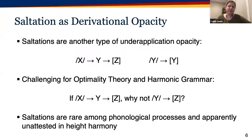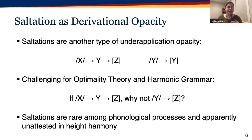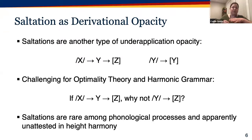Like chain shifts, saltations are a type of under-application opacity. If we have a process that maps x to y and that derived y to z, while underlying y maps faithfully to y, then the y-to-z process has under-applied to underlying y. Like chain shifts, saltations present a challenge to optimality theory and harmonic grammar because there's no way to distinguish underlying and derived y. Unlike chain shifts, saltations are rare and apparently unattested in height harmony.